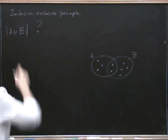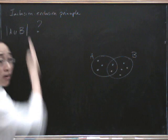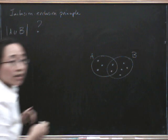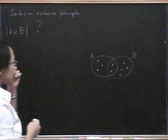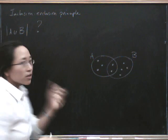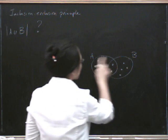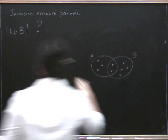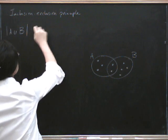Remember that if I put vertical lines around a set, that says how many elements there are. Well, I can just count them: one, two, three, four, five, six, seven, eight, nine. So there are nine elements.